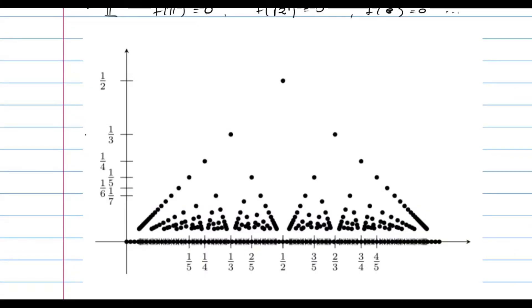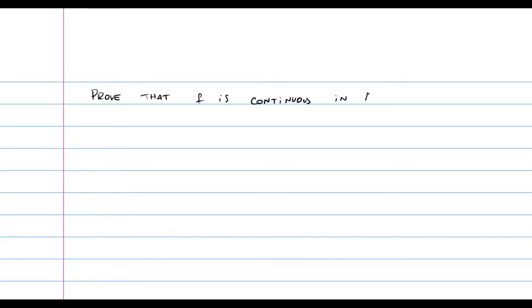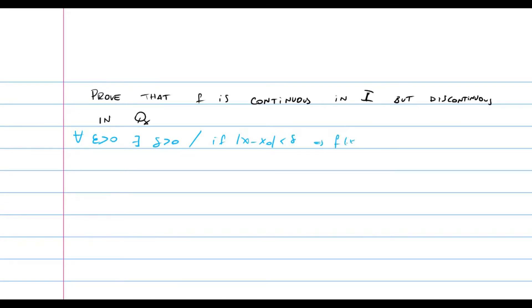This is what our function looks like. We can see it is symmetrical around one half and has many values where the function is zero — when evaluated at irrational numbers. What we need to prove is that f is continuous at the irrational numbers but discontinuous at the rational numbers. We want to show that for every epsilon greater than zero there exists a delta positive such that if the absolute value of x minus x-zero is smaller than delta, then the absolute value of f of x minus f of x-zero is smaller than epsilon, and this must hold for every x that is an irrational number.